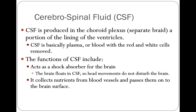CSF is basically plasma — blood with red and white cells removed. If we draw CSF and there's blood in there, it can mean there is damage to the brain or spinal column. If we see white cells, it means there's an infection — and you certainly don't want an infection in your brain. That's also known as meningitis, and that will kill you. The functions of CSF include acting as a shock absorber for the brain so that head movements do not disturb the brain, and collecting nutrients from blood vessels and passing them on to the brain's surface.